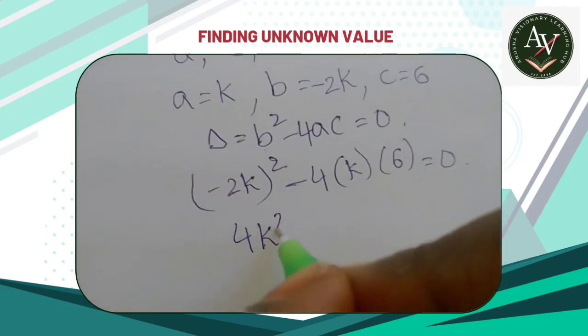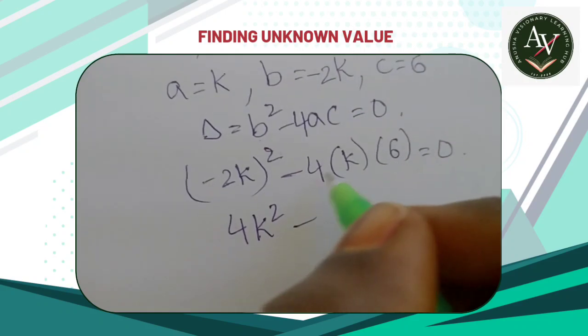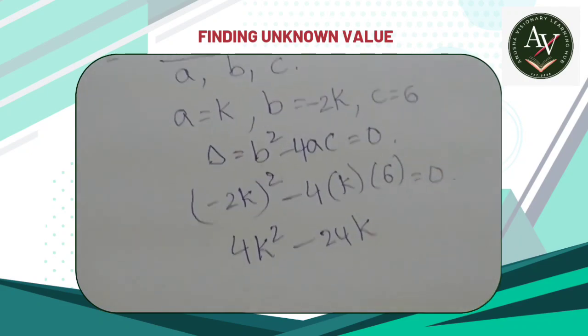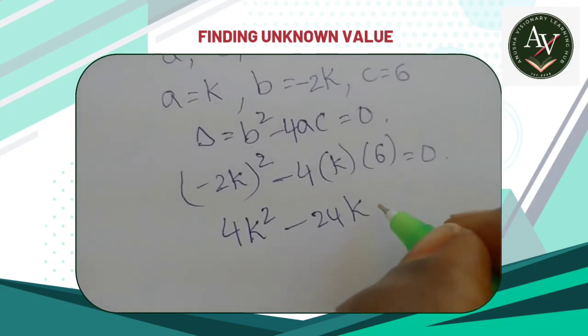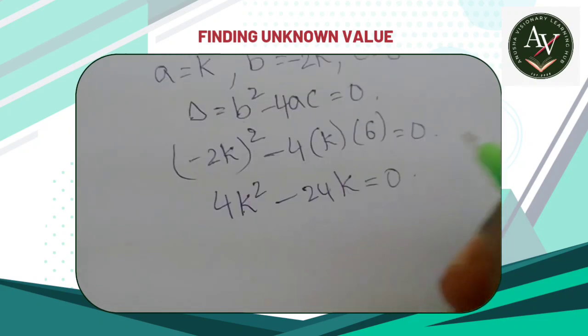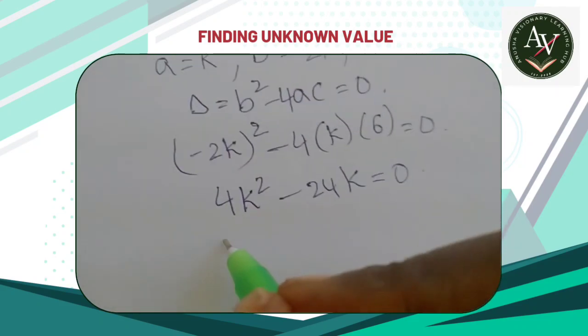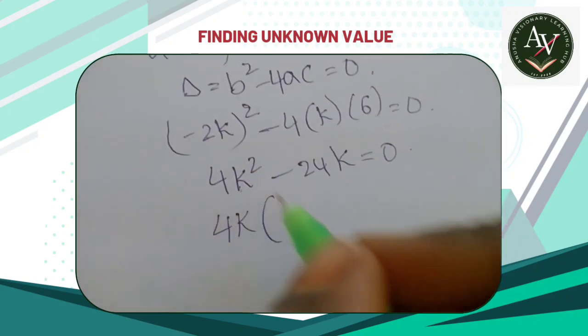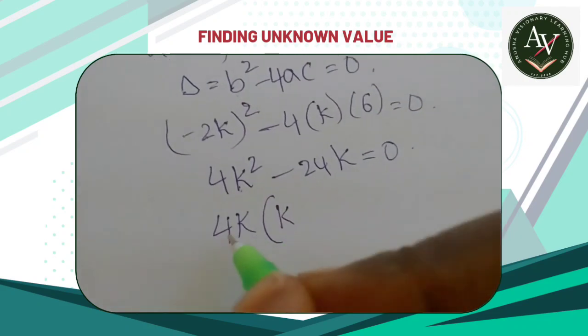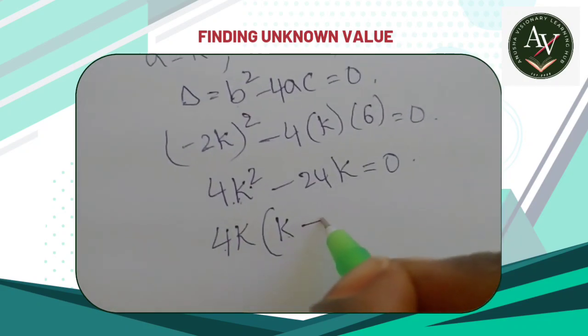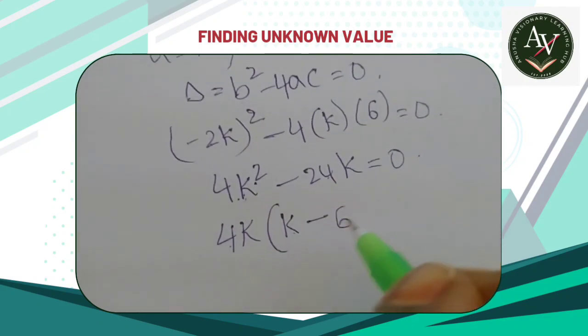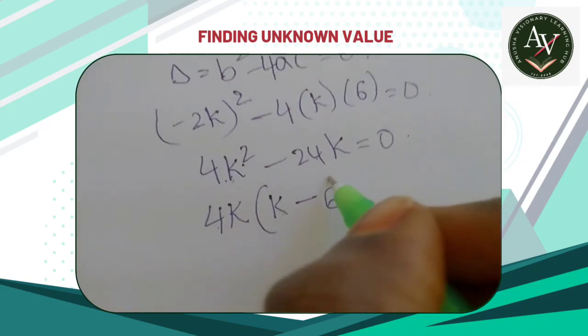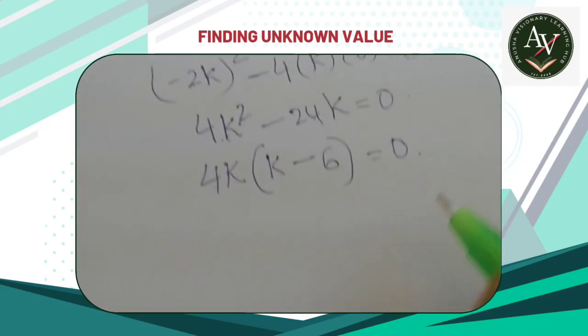So 4k² minus 4 sixes 24k equals zero. Now you can take the value of 4k as common. Then it will be, if you take 4k as common, it will be k. 4k into k, 4k². Next, 4 sixes 24 now 6. Already have taken k as common, no need to write k here. So that it will be equal to zero.